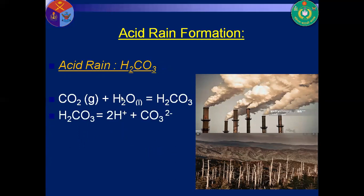Carbonic acid: carbon dioxide reacts with water to form carbonic acid, which is mixed with rain water. This carbonic acid mixed with rain water forms acid rain. The carbonic acid dissociates to form protons, making the rain acidic.